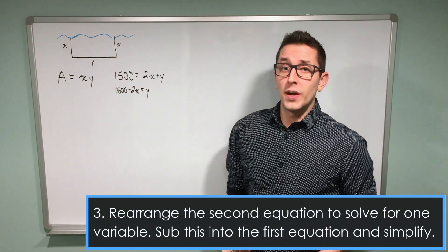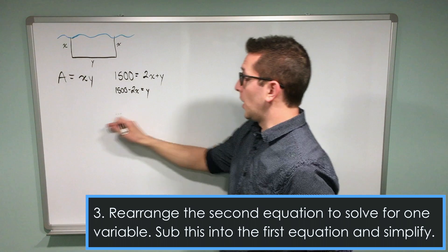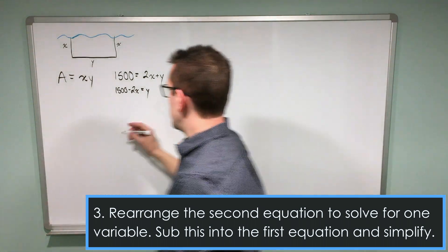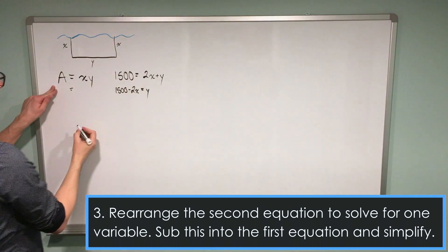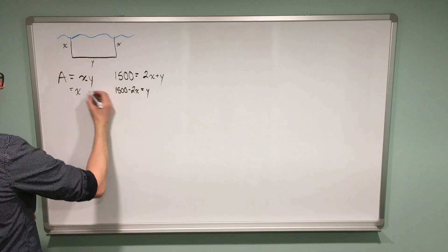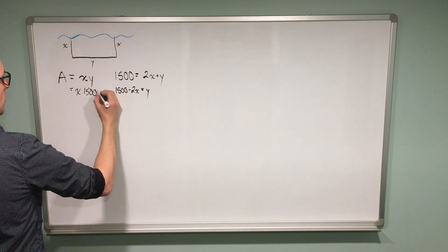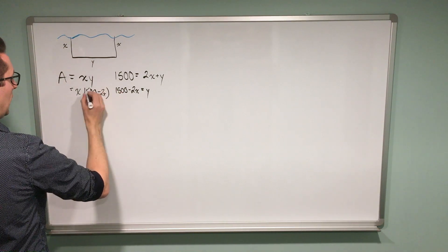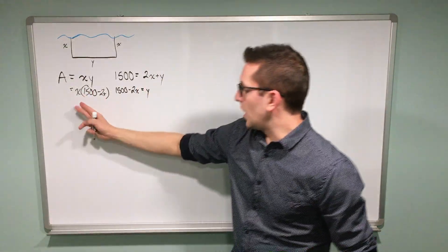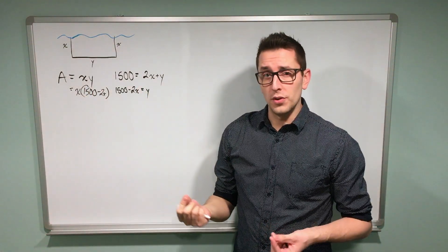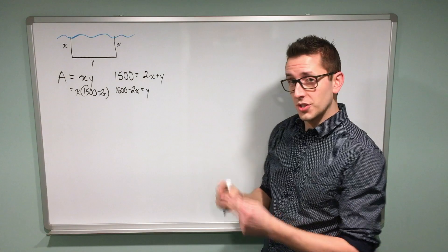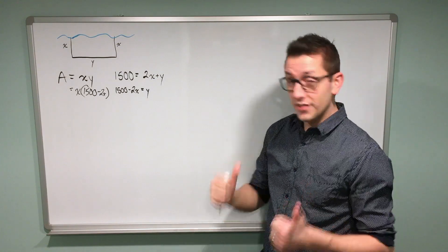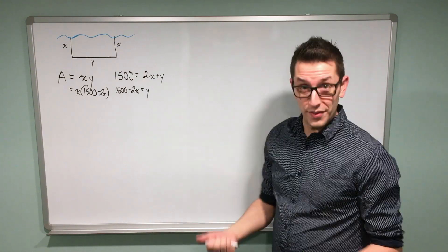What I'm going to do with this rearranged equation is substitute it into my original equation for area. When I do that, I end up with A = x times (1500 minus 2x). I've now eliminated the y variable from my area equation, so I now have an equation with one variable. That's exciting because that means we should be able to take the derivative.